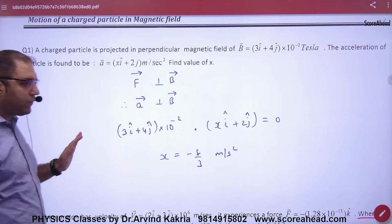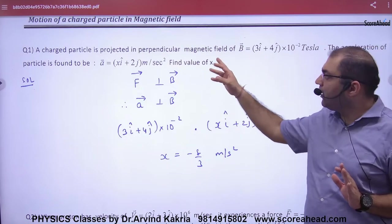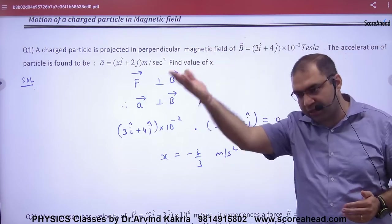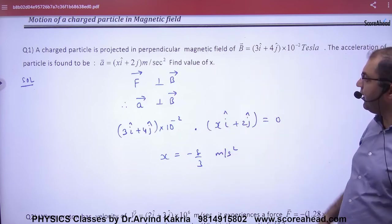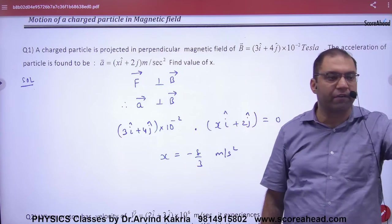As for this question, a charged particle is projected in a perpendicular magnetic field, so it will move in a circle. B vector is given. Acceleration of particle is equal to all vectors. You have to remove x.